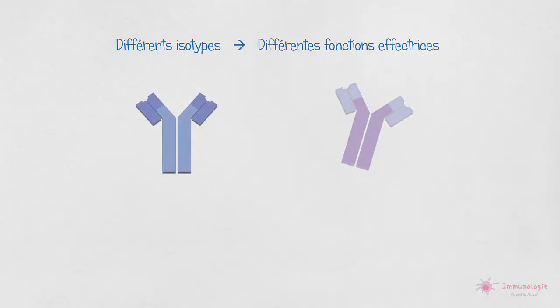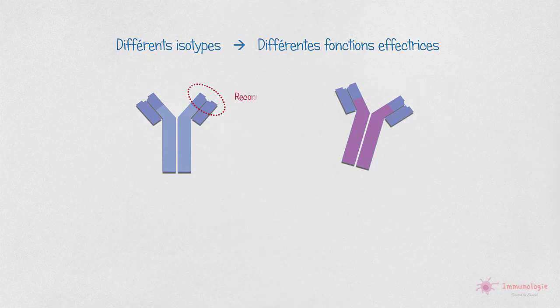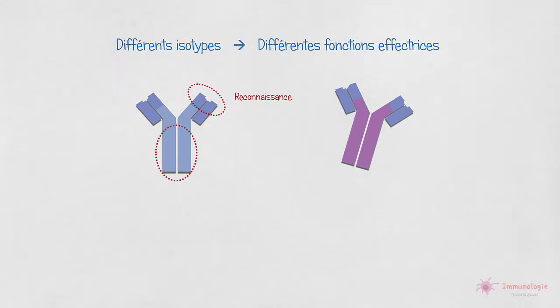Les différentes classes d'anticorps remplissent différentes fonctions effectrices. La raison en est que la plupart des fonctions effectrices sont médiées par la liaison des régions constantes de la chaîne lourde au récepteur FC sur différentes cellules, et aussi par la liaison aux protéines plasmatiques.